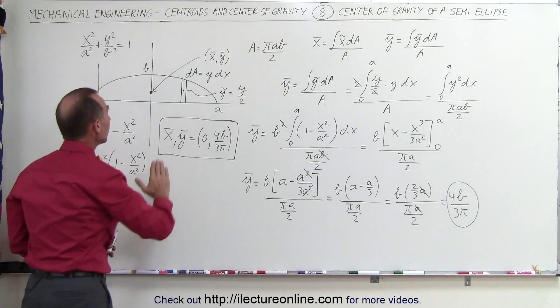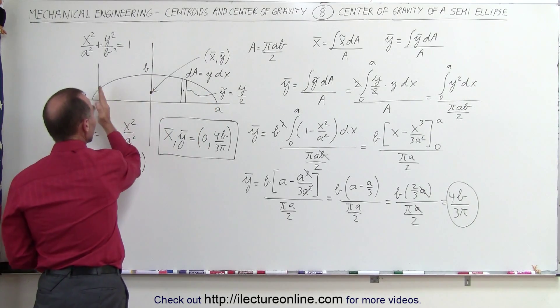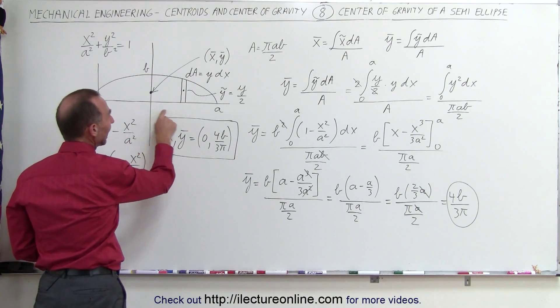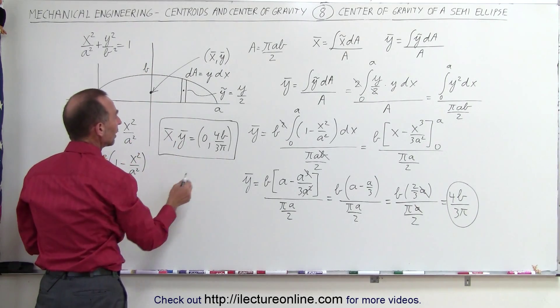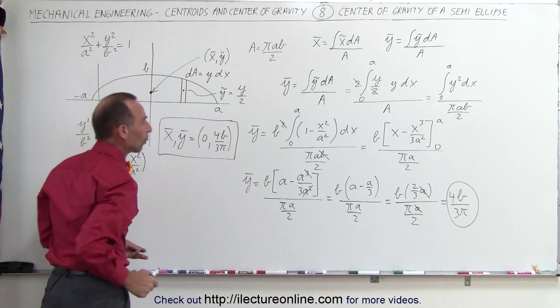What happened if we were to take the other half, the right half instead of the top half and the bottom half, then we would have an x-coordinate. And so if we do that, then we'll get a 4a divided by 3π here, and a 0 for the y-coordinate there.